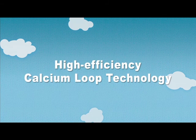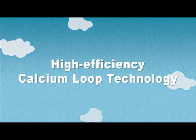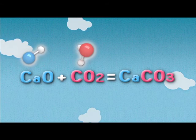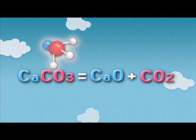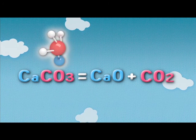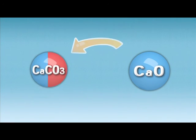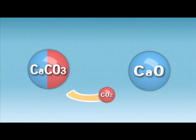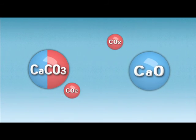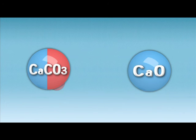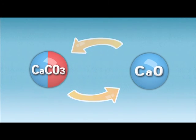E-Tree developed its high-efficiency calcium loop technology based on the absorbent reaction of calcium oxide. When calcium oxide contacts carbon dioxide, the reaction is the formation of calcium carbonate. The calcium carbonate is then regenerated to produce calcium oxide and carbon dioxide again in an ongoing cycle of reactions.